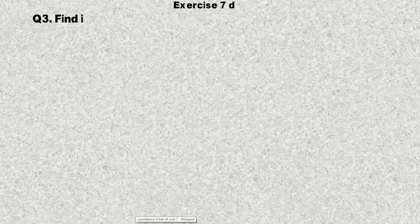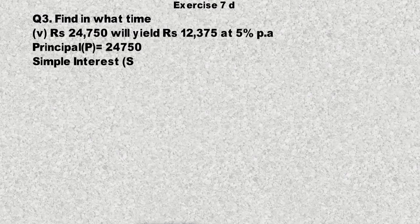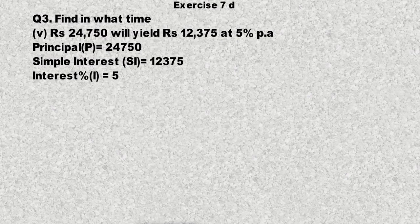Exercise 7D, Question number 3, Part number 5: Find in what time rupees 24,750 will yield rupees 12,375 at 5% per annum. 24,750 روپیہ کتنے time کے لیے invest رہے تو 5% کے حساب سے 12,375 روپیہ generate کرے۔ Principal = 24,750، simple interest = 12,375۔